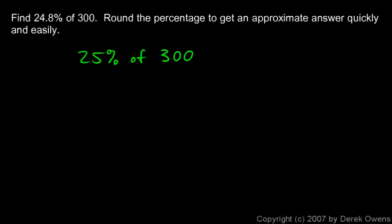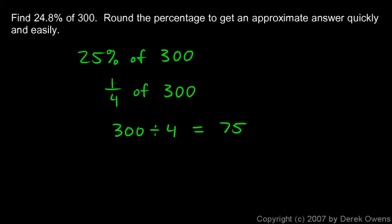25% is one-fourth, so 25% of 300 is 300 ÷ 4 = 75. So 24.8% of 300 is approximately 75. The usual warning applies: sometimes you need an exact answer, but when precision isn't required and speed matters, estimating is perfectly acceptable.